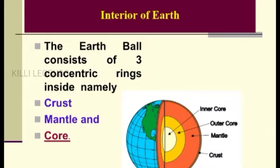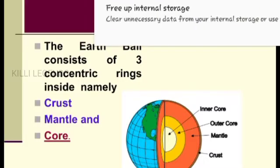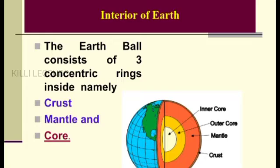In the picture, the center portion is the Core. The outer portion is the Crust and Mantle. That is Earth — Crust, Core, and Mantle. The Crust is the external part, the Mantle is the middle part, and the Core is the interior part.